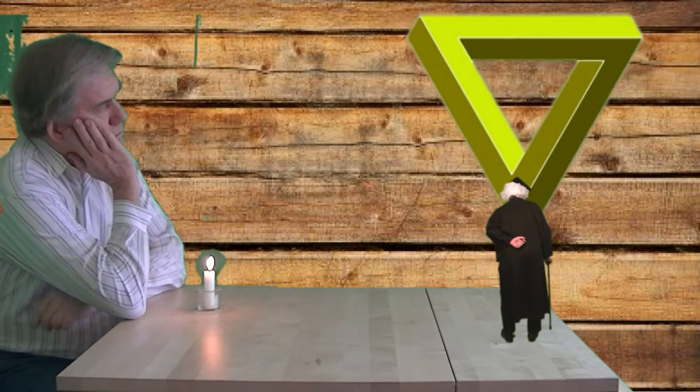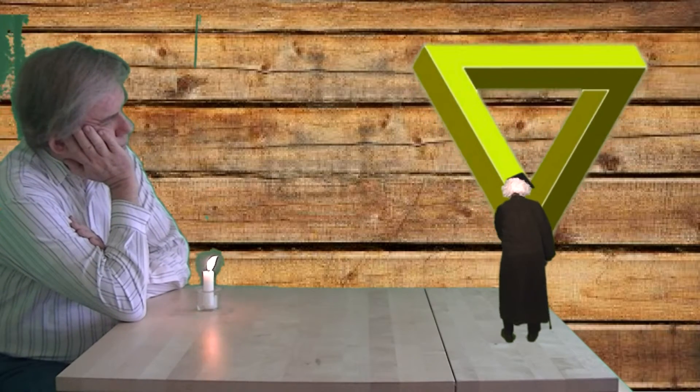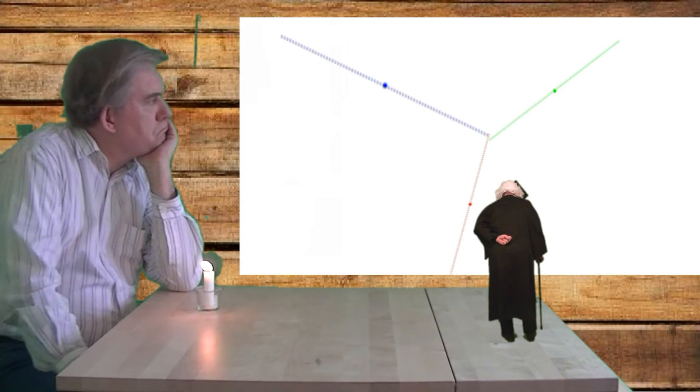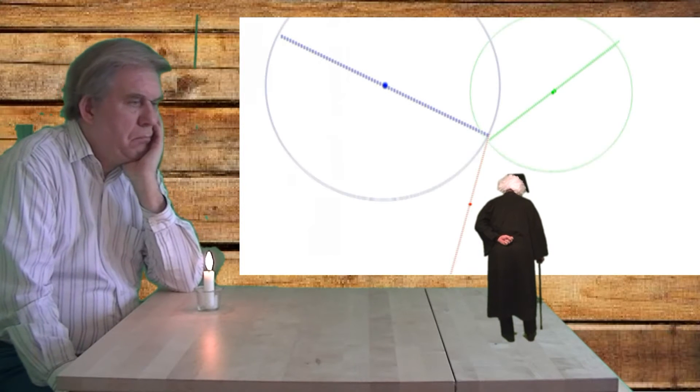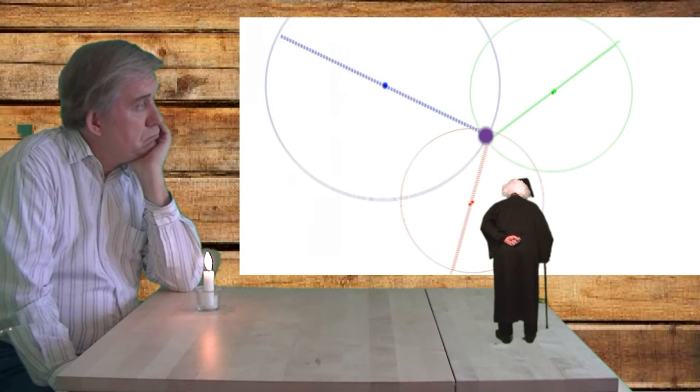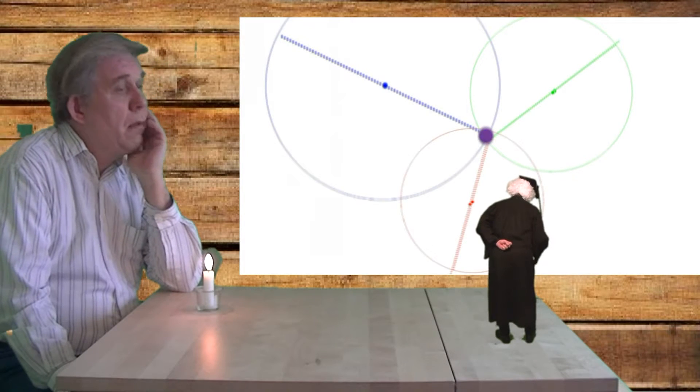GPS works by trilateration. If you want to know where you are, all you need to know is the distance to three reference points. Each distance is the radius of a circle that has each point as a center. Where the three circles meet is where you are located.